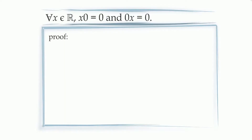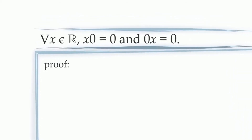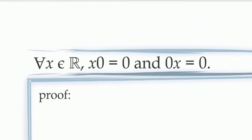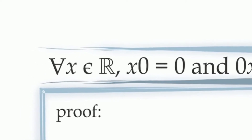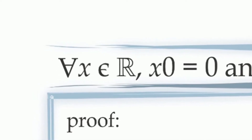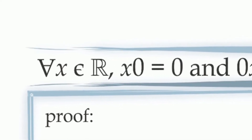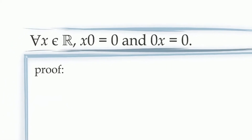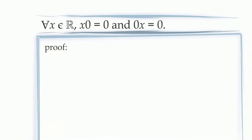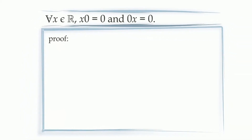Looking at the proposition, we notice it's a general proposition — it refers to a property that all real numbers have. You can see this because it starts with a universal quantifier saying 'for all x in the real numbers, x times zero equals zero.' Since we're trying to prove this for all real numbers, it's not enough to show examples like 1×0=0 or 2×0=0. We have to show it's true in general, no matter what real number we're using. To prove general propositions like this, we need to use our first rule of logic: universal generalization.